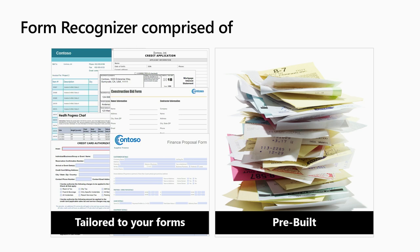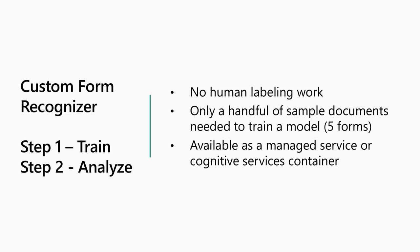Form Recognizer is comprised of two parts. The first is tailored to your form — it's custom: you bring your forms and train a model customized to your data. The second is a pre-built system where we train models for you, and we're introducing pre-built receipts today. For the custom part, step one is training: you bring five sample forms or an empty form with no human labeling work, and the system creates a model based on your forms.